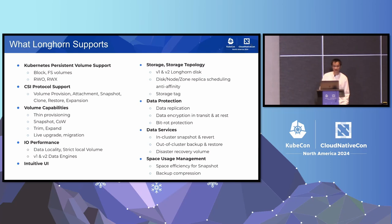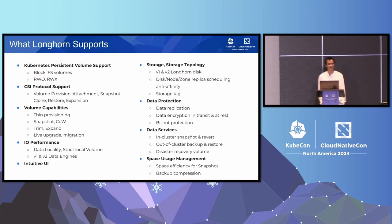For I/O performance, we have features to increase performance. The first is data locality — Longhorn tries to put the volume's data on the same node as the pod to increase performance. Another feature is strict local volume, where the data is fixed on a node and cannot be attached to a different node, which shortens the data path for better performance. Right now Longhorn has a V1 data engine; however, we are working on the next generation called the V2 data engine, based on SPDK. I'll have more detail about that later.